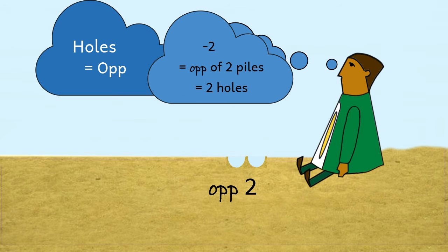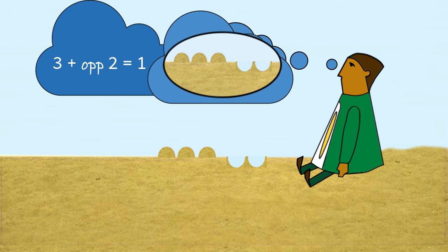We as a society don't use the word opposite to denote opposite. We use a tiny dash and call it a negative sign. So negative two really means the opposite of two, or the opposite of two piles. That is, two holes. And an equation like three plus op2 equals one is now written as three plus negative two equals one.